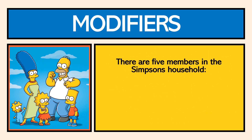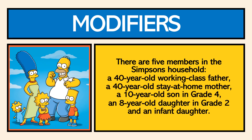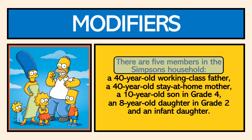What we could do instead is start by saying there are five members of the Simpsons household, colon, and then provide the list after. The reader now has the context with which to organize all that information.